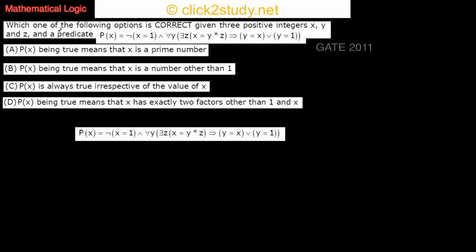We come to the next question: which one of the following options is correct? Given three positive integers x, y, and z and a predicate P(x), we have to tell which of the options is correct. I've written this predicate here and we're going to see what this predicate actually means.